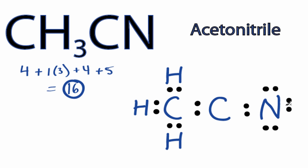All of the atoms in the CH3CN Lewis structure have full outer shells, except carbon, which only has four, and remember, hydrogen only needs two for a full outer shell.